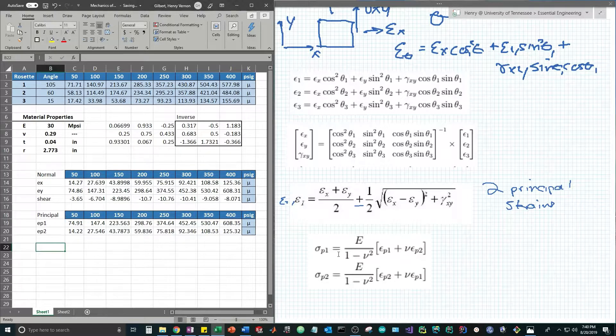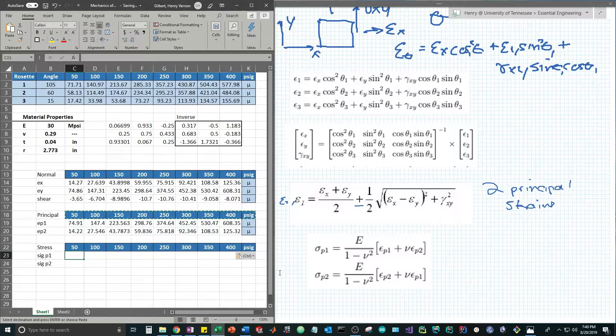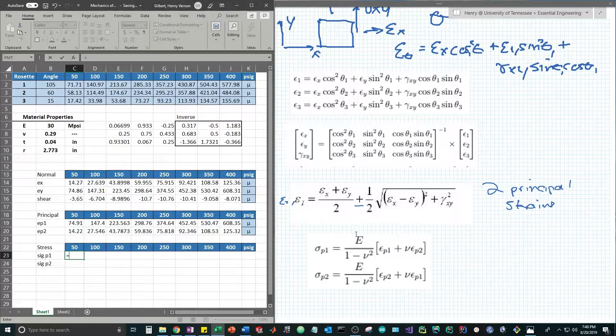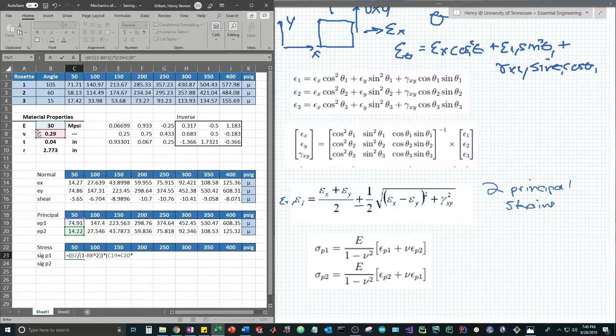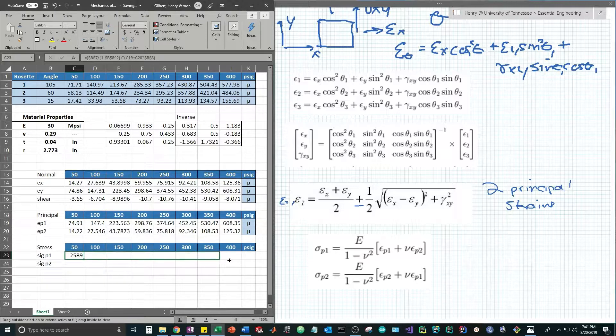Onto the final step, we're going to be using Hooke's law to calculate stress. We have two principal stresses sigma p1 and sigma p2 at each pressure increment. This uses the material properties of Young's modulus and Poisson's ratio. Sigma p1 is Young's modulus divided by 1 minus Poisson's ratio squared, close that parentheses and multiply by the first principal strain plus the second principal strain multiplied by Poisson's ratio. Let's make all the material properties absolute references so that once we start dragging this across it's not going to mess up our formula. We drag this across and let it calculate.